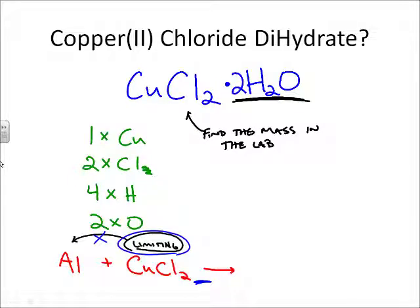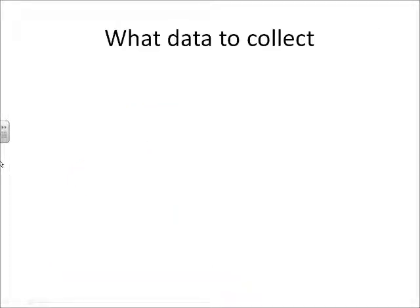As far as what data you're going to be able to collect in the lab, before when we did a single replacement reaction in the lab, copper and silver nitrate lab, and we formed silver metal. Here we're going to be forming copper metal, but we're not going to be able to measure how much of the copper we actually produce.